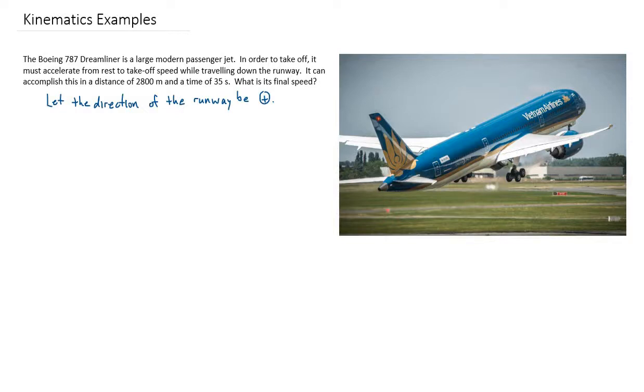So we've got the Boeing 787. In order to take off, it must accelerate. So we've got acceleration going on from rest. So that's the first definite piece of information we have, and that is that our initial velocity is zero.